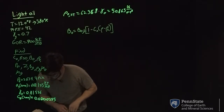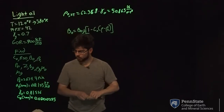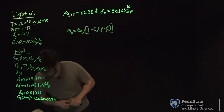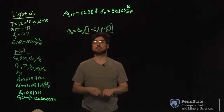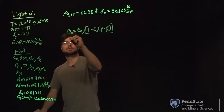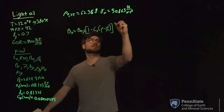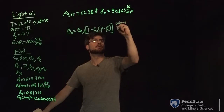For below bubble point, you're going to be using equations 3.44 and 3.45, and you can also use this equation to find your BO at bubble point as well. For these equations, this form is going to be above PB.